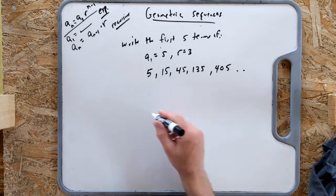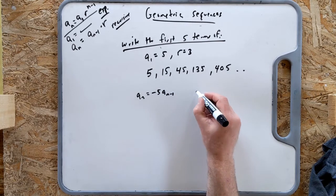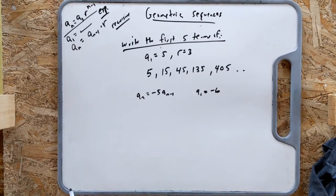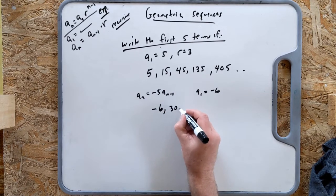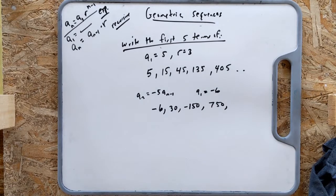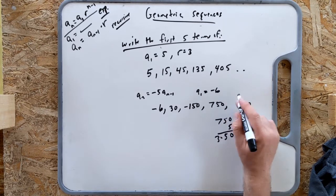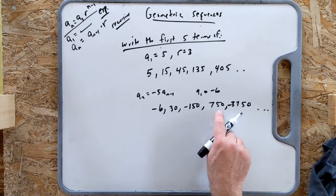Another example: find the first five terms given the recursive formula a_n equals -5 times a_(n-1), with a_1 equals -6. The first term is -6. Next: -5 times -6 is 30. Then -5 times 30 is -150. Then -5 times -150 is positive 750. Then -5 times 750 is -3750. Notice what a negative r value does: it makes the signs alternate — negative, positive, negative, positive, negative.